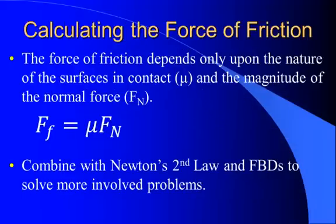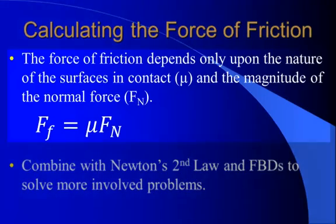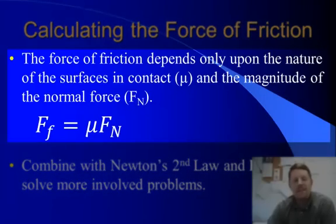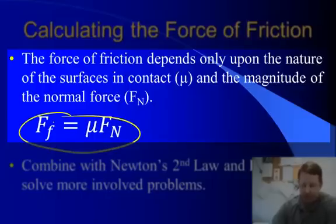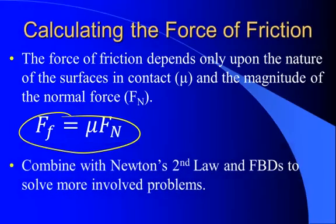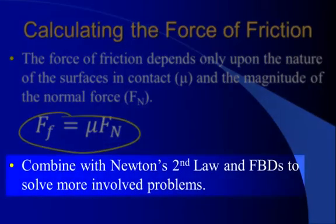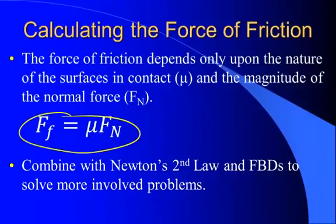Now, in calculating the force of friction, remember the force of friction depends only upon the nature of the surfaces in contact, that coefficient of friction, as well as the magnitude of the normal force. And we can quantify this mathematically as force of friction equals μ, the coefficient of friction, times the normal force, FN. We can combine this with what we've already been doing with Newton's second law and free body diagrams to solve some more involved problems. And instead of talking about it a whole lot, maybe it makes more sense to do a couple more examples.